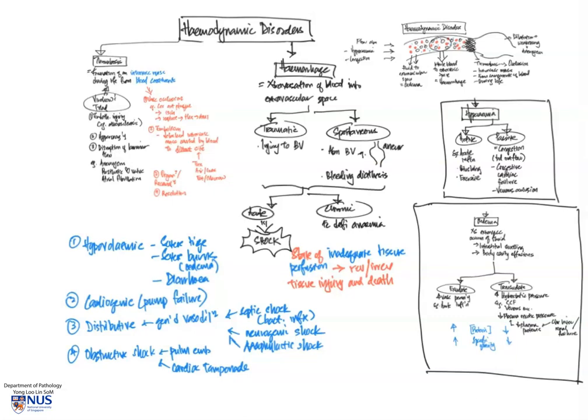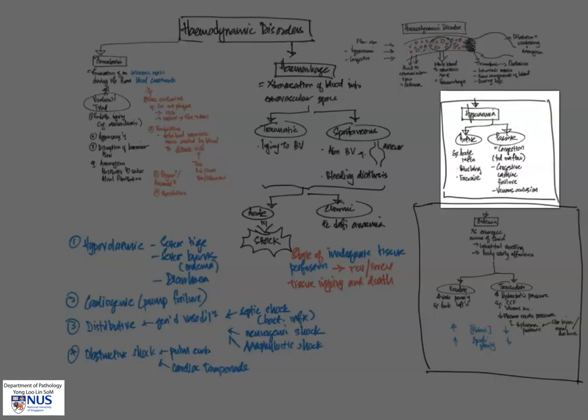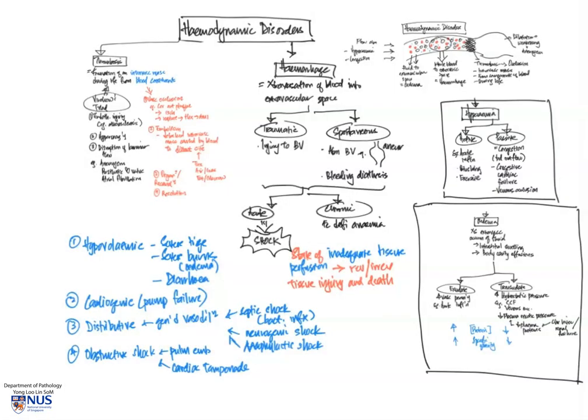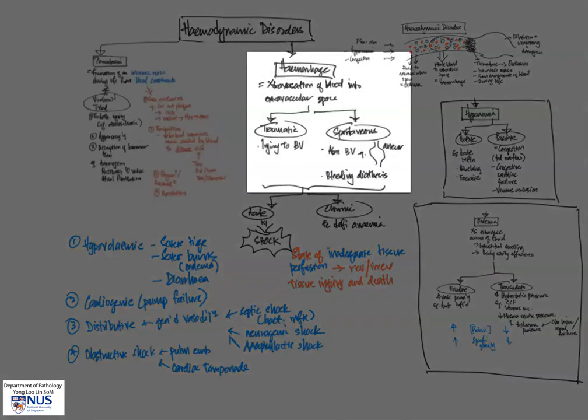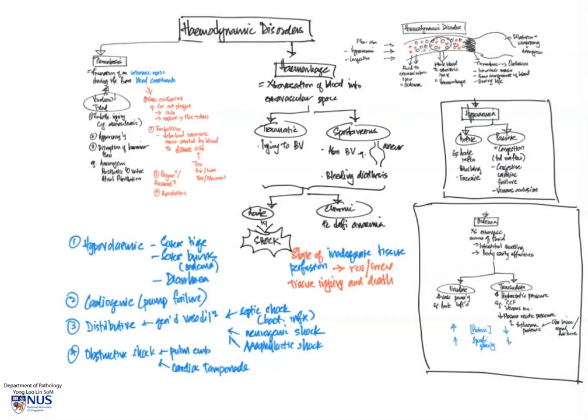So we have looked at some of the major hemodynamic disorders, starting off with hyperemia, followed by edema, followed by thrombosis, and finally hemorrhage and the different types of shock.